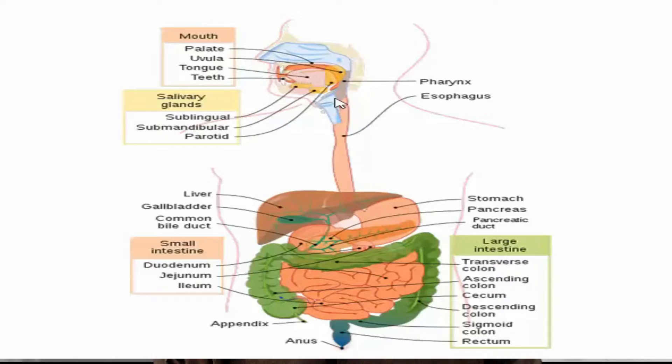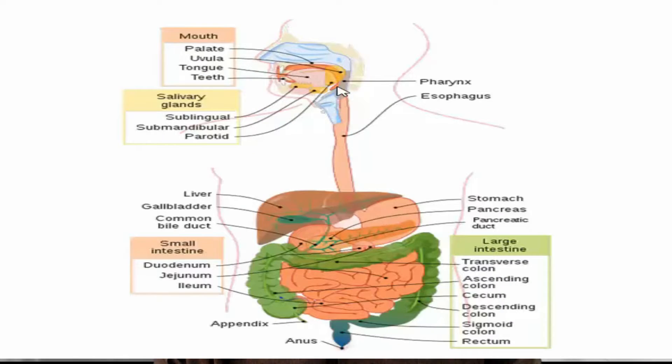Acid reflux is the condition in which acid regurgitates from the stomach into the esophagus, which is the tube that joins the mouth to the stomach. You can see on the diagram this tube right here running from the mouth to the stomach — this is the esophagus.